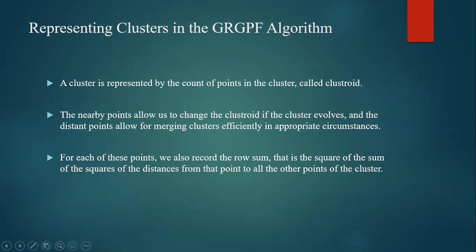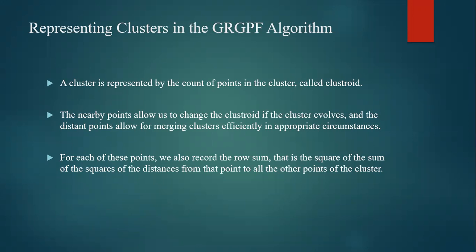Representing clusters in the GRGPF algorithm: a cluster is represented by the counts of points in the cluster, called clusteroids. The nearby points allow us to change the clusteroid if the cluster evolves, and the distant points allow for merging clusters efficiently in appropriate circumstances. For each of these points, we also record the row sum — that is, the sum of squares of the distances from the point to all other points of the cluster — and we estimate that value with an equation we will see in upcoming slides.